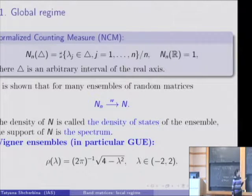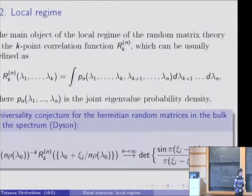This question is from the so-called global regime of the matrix theory which deals with the statistical properties of eigenvalues on the interval of constant lengths. The other interesting regime of the random matrix theory is local regime which deals with statistical properties of eigenvalues on the interval whose length is of order the mean distance between eigenvalues, so it tends to 0 when n tends to infinity. For example, in the bulk of the spectrum, and we will speak about the bulk of the spectrum, this interval should be of the length 1 over n. The main object of the local regime is the k-point correlation function, which usually can be obtained if we take the joint eigenvalue probability density and integrate it over the last n minus k variables.